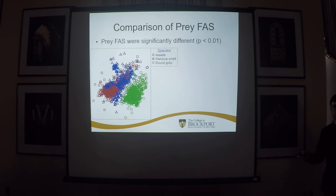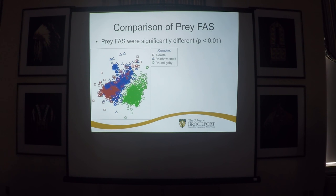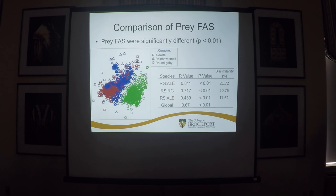Next we're looking at the fatty acid signatures of individual prey fish. The figure on the left is an ordination plot where each individual point represents the fatty acid signature of one fish — that point representing the concentrations of 24 different fatty acids — and the distance between points represents their similarities. You can see three groups forming: alewife, rainbow smelt, and round goby. The largest difference was between round goby and alewife with an average dissimilarity of almost 22 percent, while the most similar were rainbow smelt and alewife, with almost 18 percent dissimilarity.